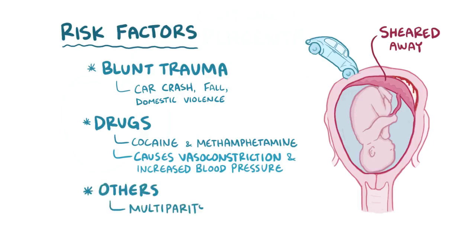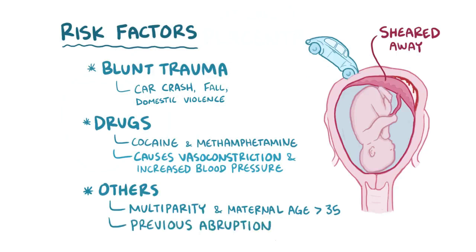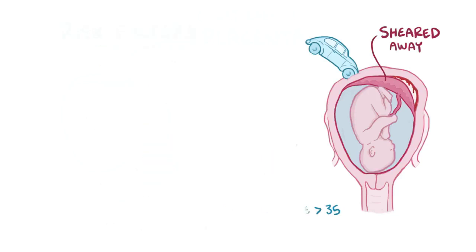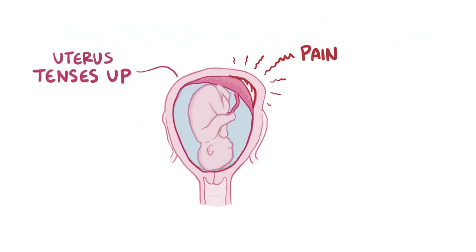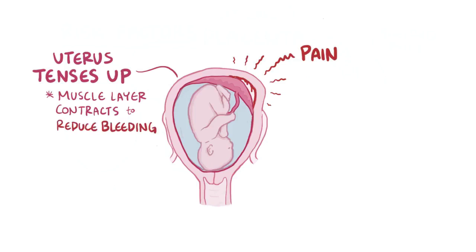Other risk factors include multi-parity or multiple pregnancies and a maternal age over 35 years old. Interestingly, the strongest factor for placental abruption is having had a previous abruption. Placental abruption is often accompanied by pain in the area of the abruption, and the uterus might tense up and become rigid as the strong muscular layer contracts to clamp down on the uterine vessels to reduce the bleeding.